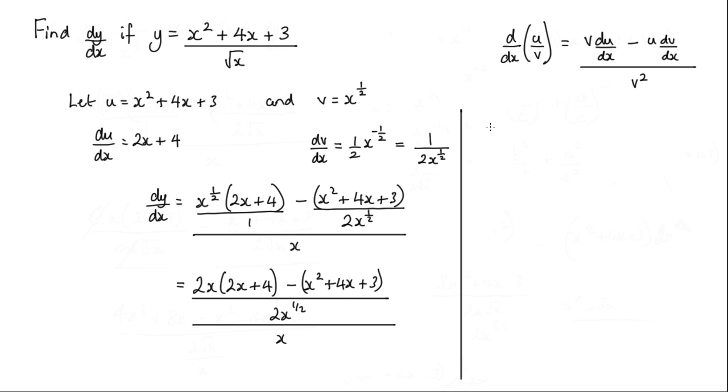Now carrying on with this, let's do some simplifying. If I expand these brackets here, I'll have 4x², then I'll have 8x. I'll have -x² with that second bracket, -4x - 3. That whole thing is over 2x^(1/2), which is all over x.